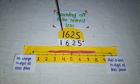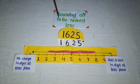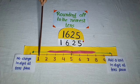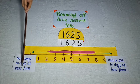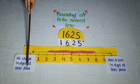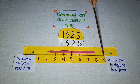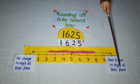The number is 1625. When we round off to the nearest ten, look at the place of ones. If the digit is 4, 3, 2 or 1, then there is no change in the digit at the tens place. If the digit is 5, 6, 7, 8 or 9, add a unit to the digit at the tens place.